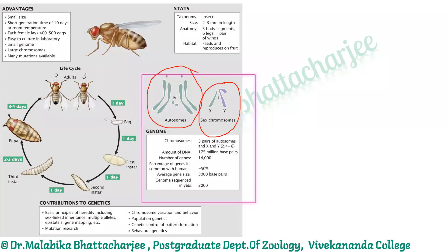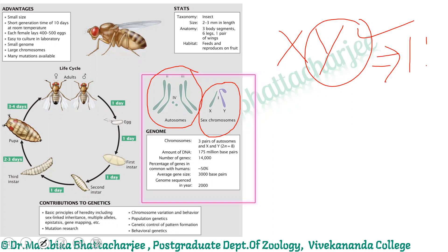Long back in 1926, this was a theory proposed by Calvin Bridges. In 1926, he said that instead of the XY system — where Y is the determining factor for sex in humans — in the case of Drosophila, the XY chromosome is not the determining factor. According to him, sex is determined by the genic balance or the ratio between the X chromosome and the autosome genomes — that is, the ratio of the X chromosome to the autosome set.